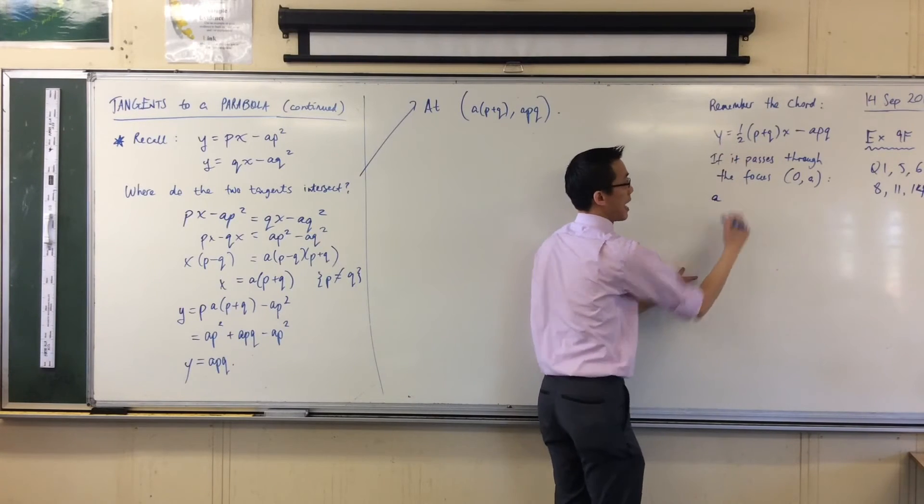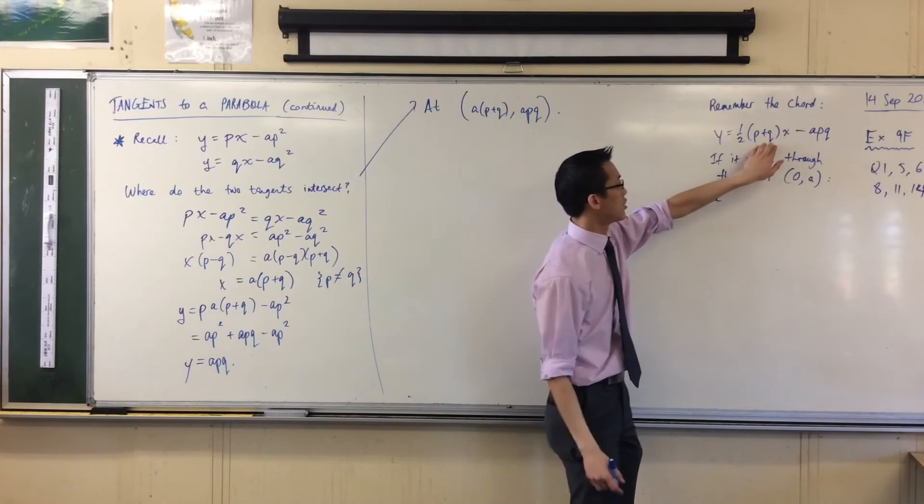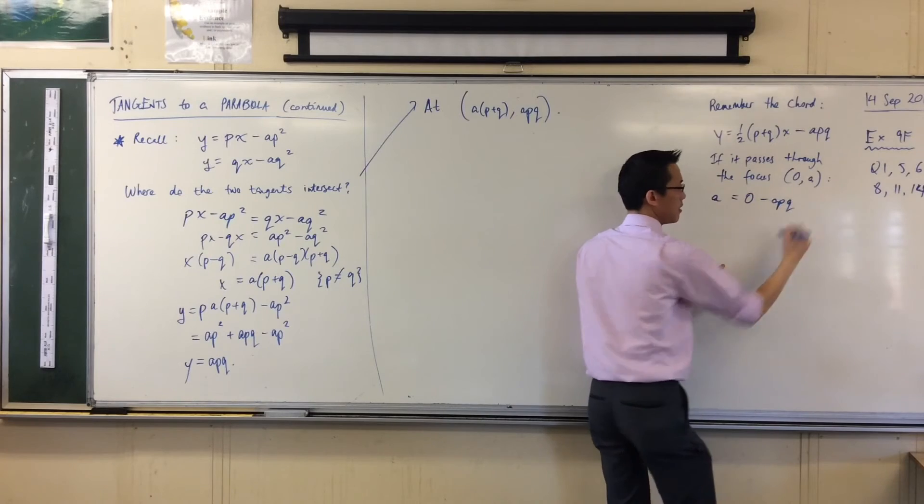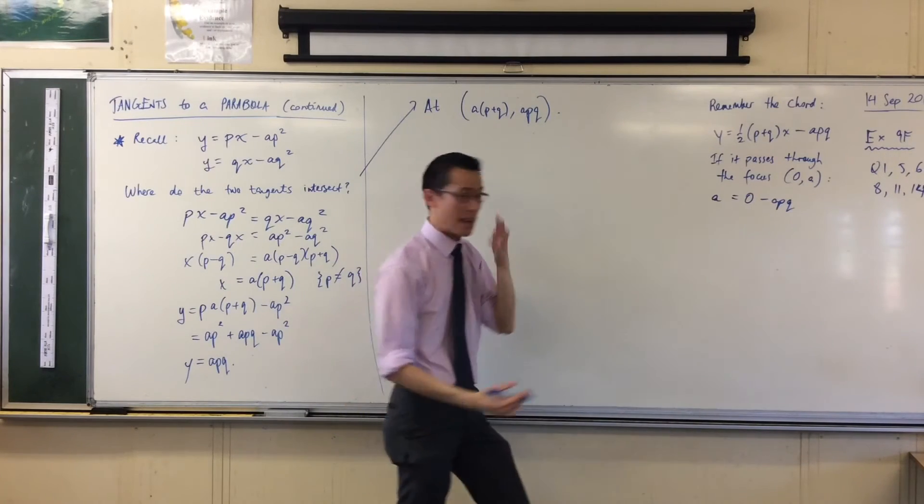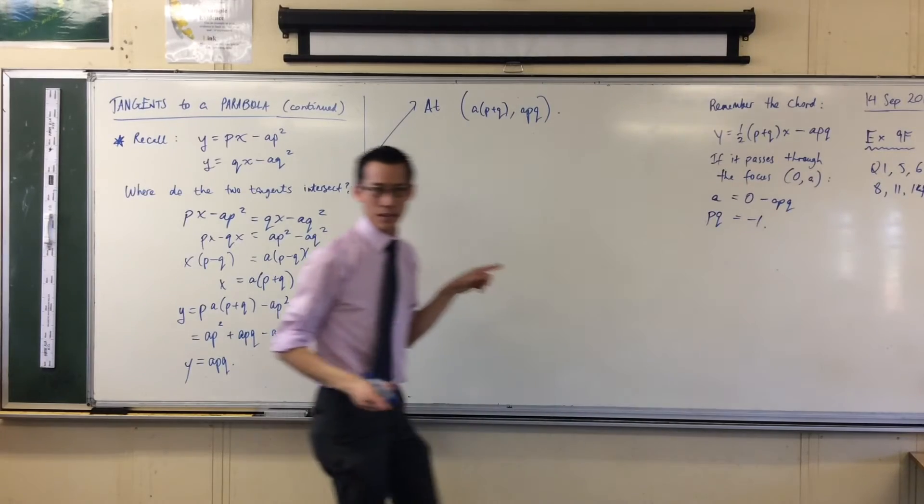The focus, at least your sort of classic focus, it has the coordinates 0, A. So if we pop this into the equation of the chord, I wonder if you remember what results. Here's A. Where does the 0 come in? It just makes this term disappear. Do you remember that? So you get this, and then you divide through by minus A and out pops this guy.